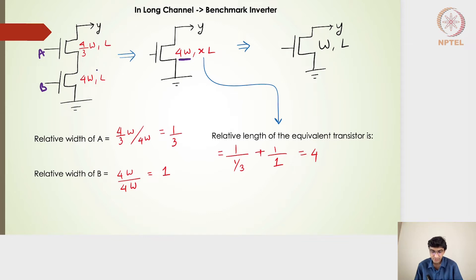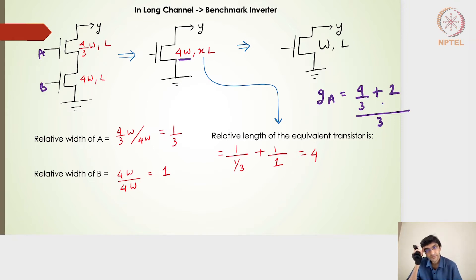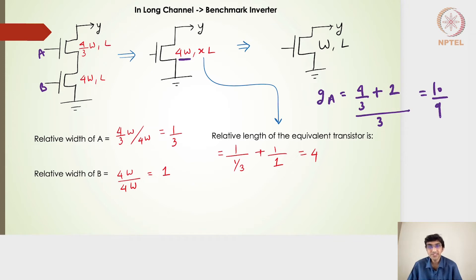To find the logical effort of input A, we need its input capacitance — the sum of the NMOS width and PMOS width divided by the 2:1 inverter's input capacitance. For a two-input NAND gate with size 2 on the PMOS side, input A logical effort is (4/3 + 2) / 3, which equals 10/9. This is much less than 4/3. Similarly, we now ask: what should the logical effort be using the short channel current model?